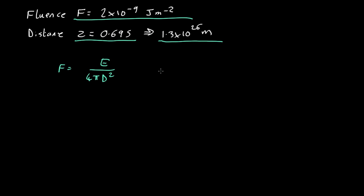So, we can simply work out the total energy is 4 pi d squared times the fluence. We know the distance and the fluence, and that comes out as 4 by 10 to the 44 joules.